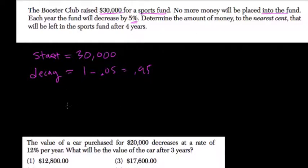You turn the amount of money to the nearest cent that will be left in the sports fund after four years. So you take 30,000, or your start value, times your decay factor to the power of years that have passed.